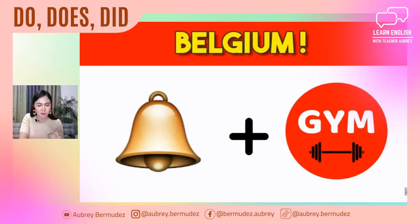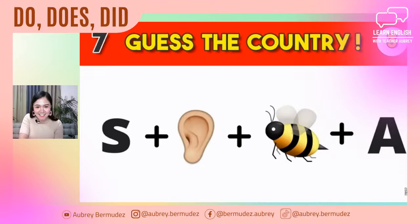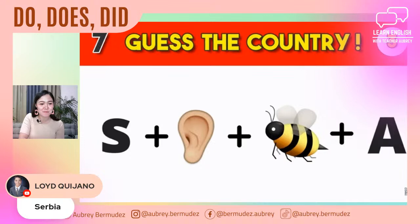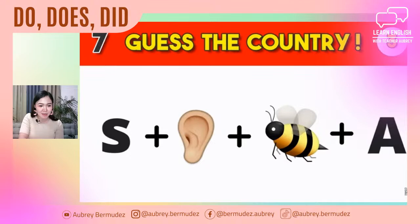Next one — we have the letter S, an ear, letter B, and letter A. What country is that? I saw the correct answer from Lloyd Quijano. It is Serbia. From Christine, from my husband Uriel — Serbia. The correct answer is Serbia.